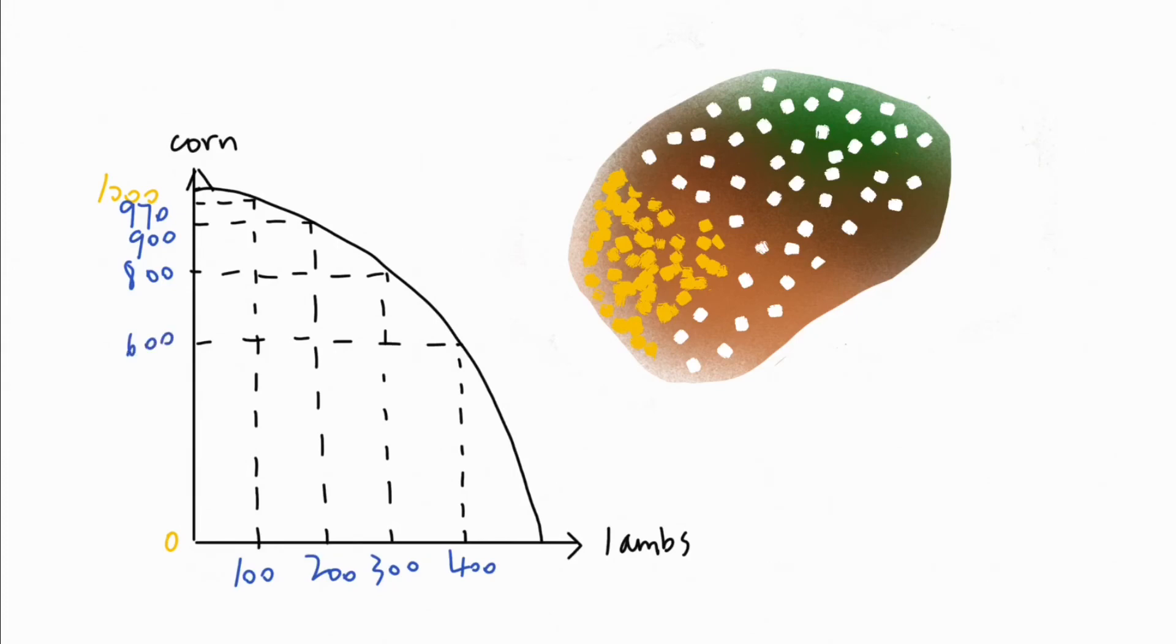And lastly, the last bit of land that's best suited for growing corn and least suited for grazing lambs will be used for the lambs. We have given up 600 units of corn for the incremental 100 lambs, and now all the land is used for lambs.